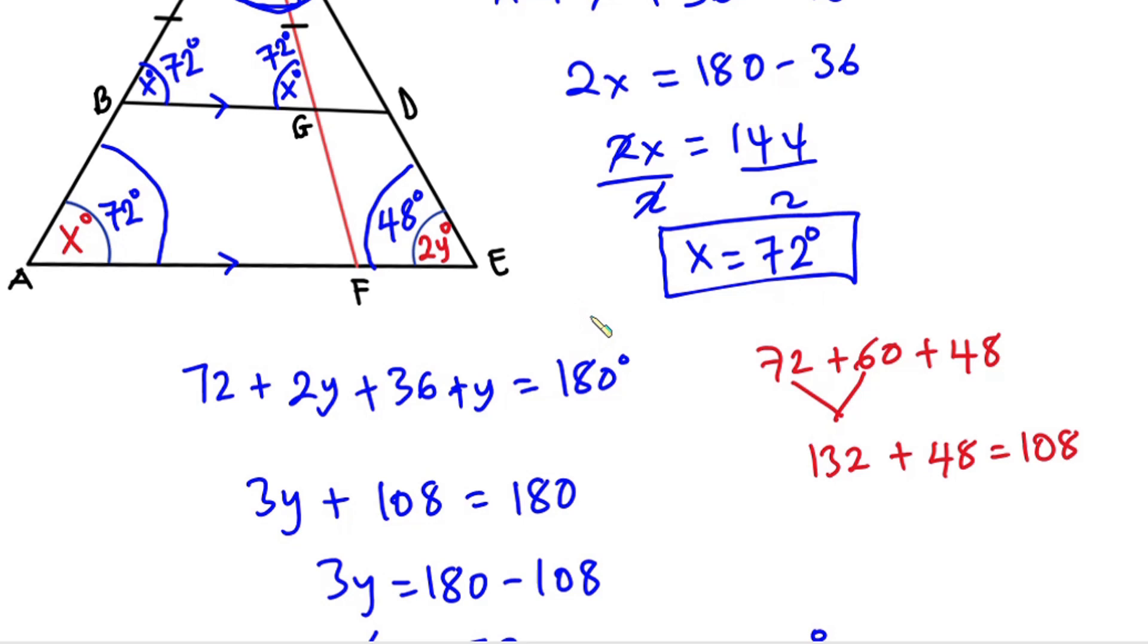So we have x to be 72 degrees and we also have y to be 24 degrees. I hope you found this video useful. Please give it a thumbs up and don't forget to subscribe to this channel. Thanks a lot for watching, see you again on the next video.